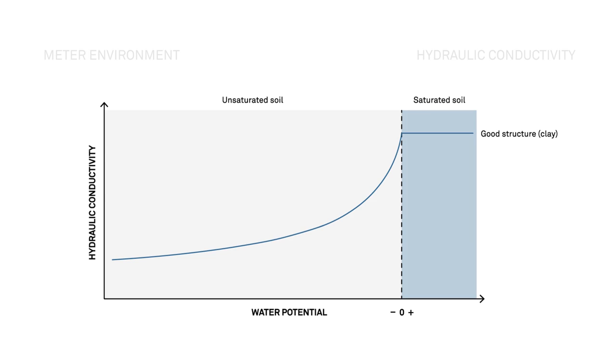When the water potential is negative, unsaturated, the hydraulic conductivity varies greatly. When it reaches its saturated state, the hydraulic conductivity remains constant.